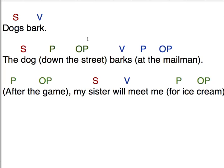Which dog? The dog down the street. When does it bark? It barks at the mailman. So just to reinforce those prepositional phrases. But the core of the sentence is always going to be the subject and the verb. My sister will meet me. The dog barks.